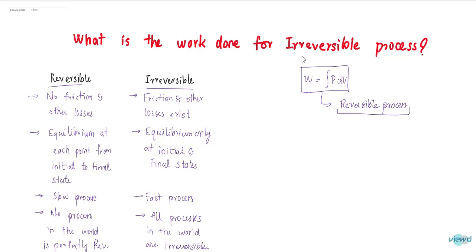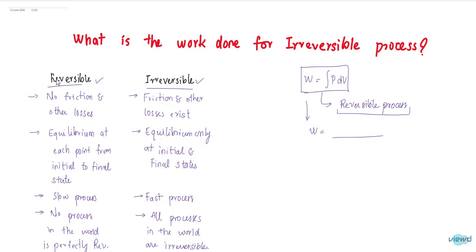Then the next question that will be asked is: what is the work done for an irreversible process? So let us derive that equation now. First, let us understand what is reversible and what is irreversible. Reversible means no friction and other losses. So frictional losses and any other losses that will be present do not exist in the reversible process.